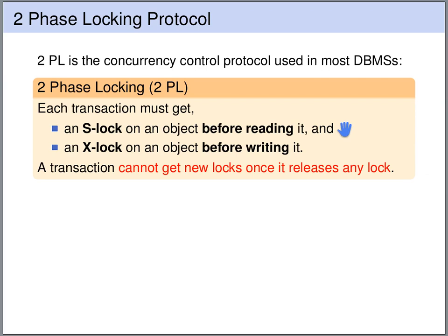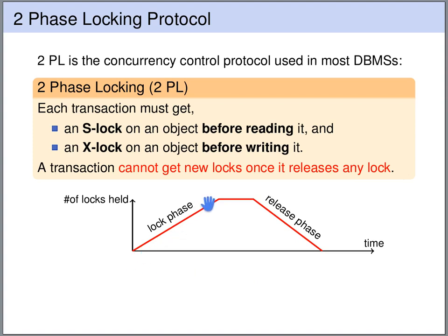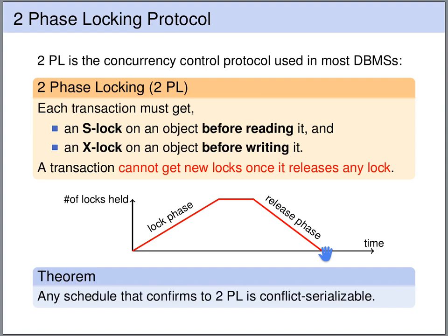We must obtain shared locks before reading objects and exclusive locks before writing objects. Moreover, two-phase locking requires that a transaction cannot obtain any new lock once it has released any lock. So transactions run in two phases: first a phase of obtaining locks, then a phase of releasing locks. The nice property of two-phase locking is that every schedule conforming to it is conflict serializable, thus ensuring serializability.